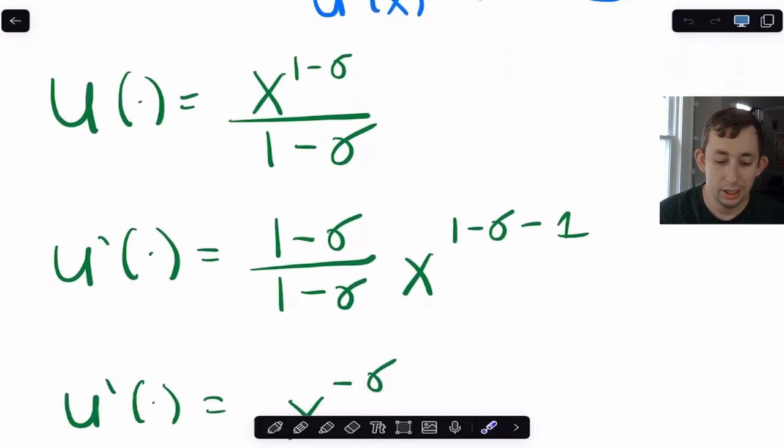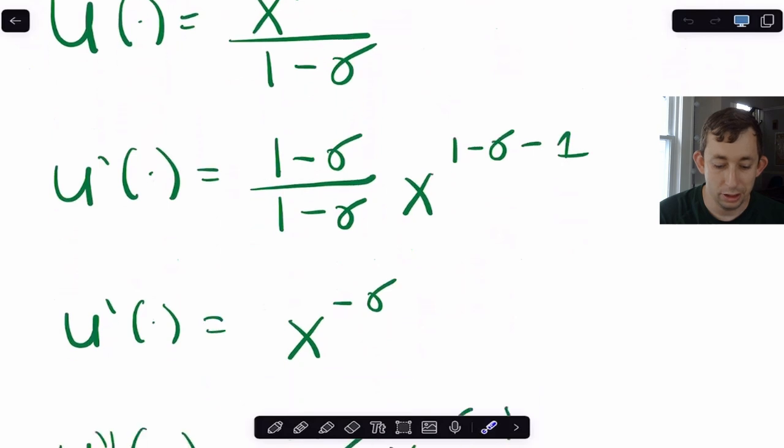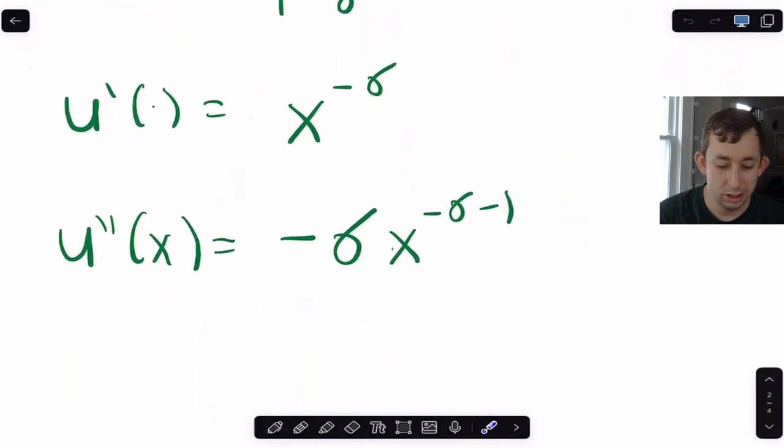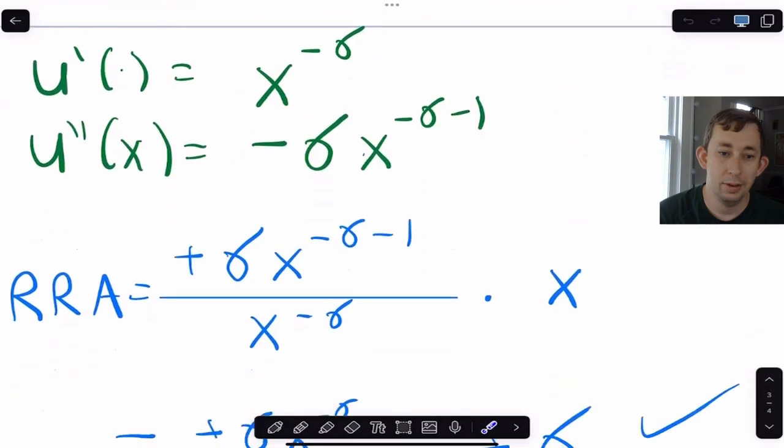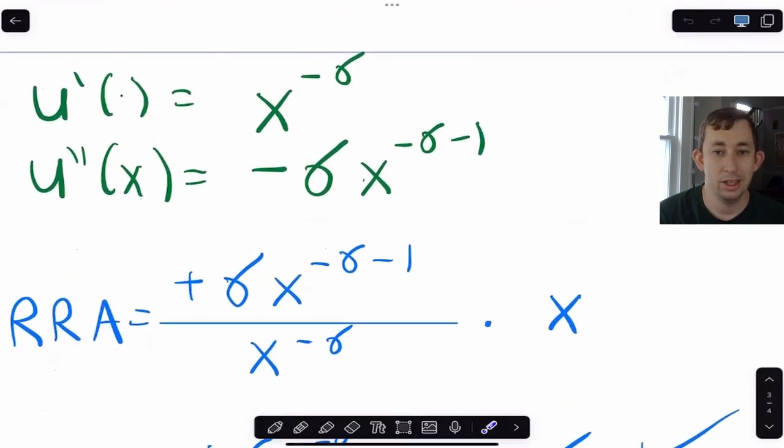So here's our utility function, and what I've done is I've found the first derivative, and then I've used the first derivative to find the second derivative, and now what I'm going to do is I have my first and second derivative.